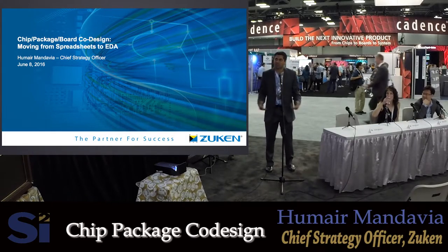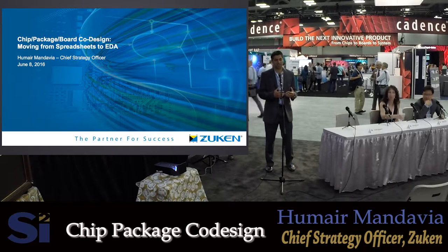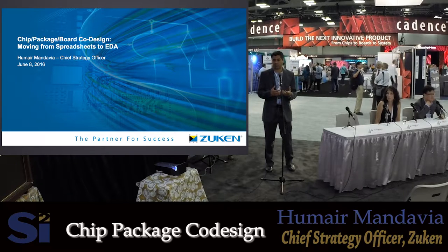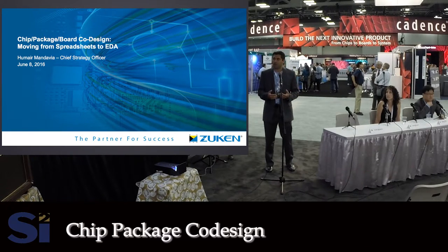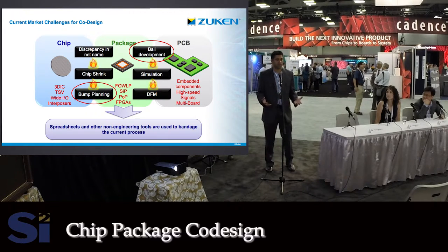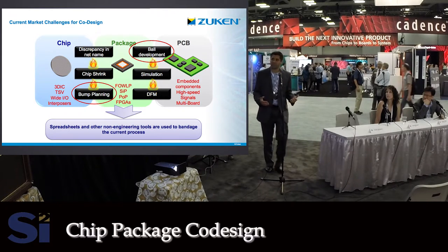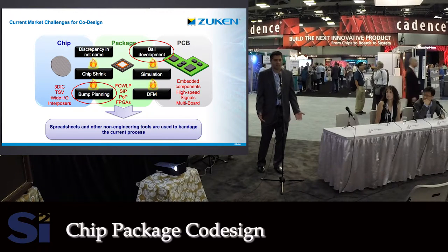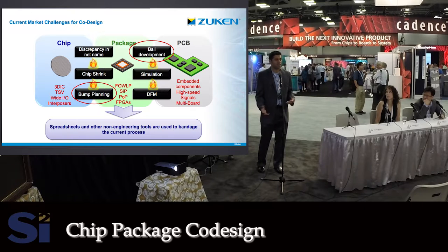Today I want to talk about how we want to shift the methodology from spreadsheets into EDA through chip package board co-design. From a simplistic point of view, we have three domains: the chip domain, the package domain, and the PCB domain. We're also tackling issues such as TSVs, 3D ICs, package-on-package, SIP technology, embedded components, and high-speed design. When we start looking at the system holistically, design teams are running into problems — engineers are using different net names from chip versus package versus board.